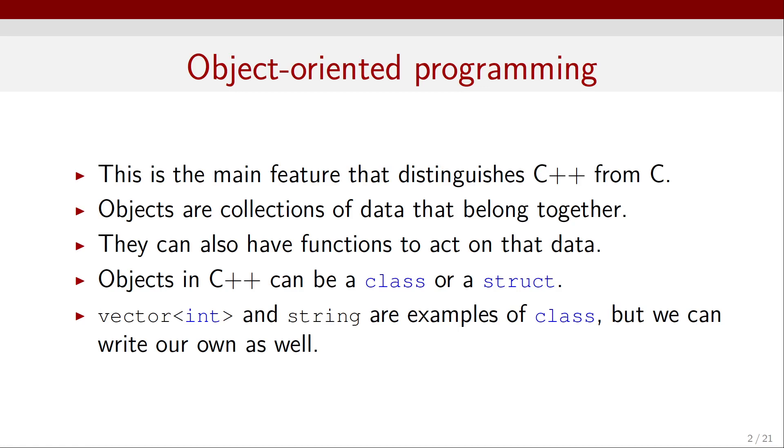Generally, objects in C++ can be a class or a struct, which stands for structure. A vector integer, for example, or a string are examples of a class, but we can write our own as well.